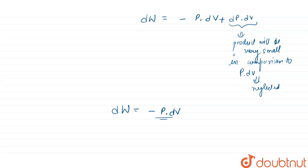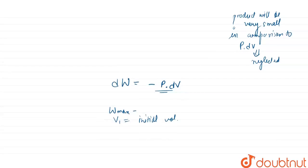When the expansion of the gas is carried out reversibly, there will be a series of such P·dV terms. Thus the total maximum work, W_max, can be obtained by integrating the equation between the limits V1 to V2, where V1 is the initial volume and V2 is the final volume.